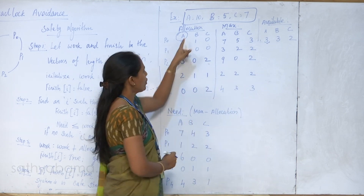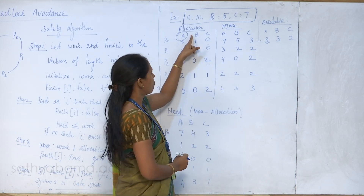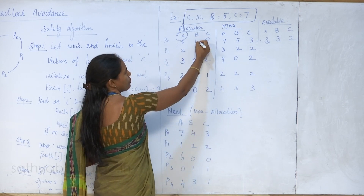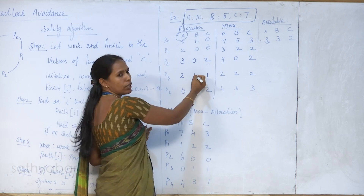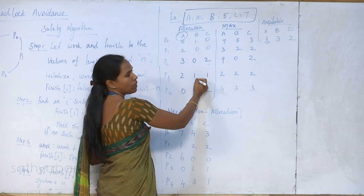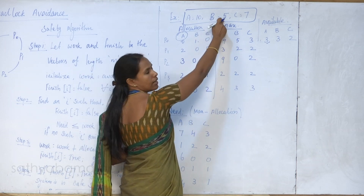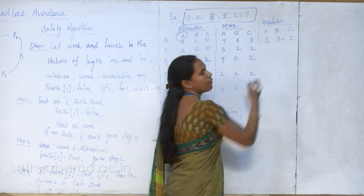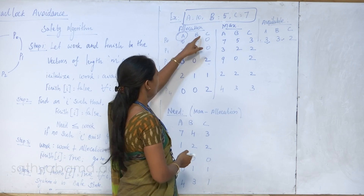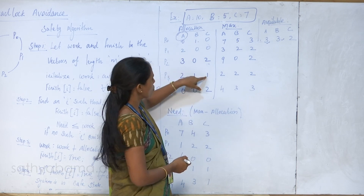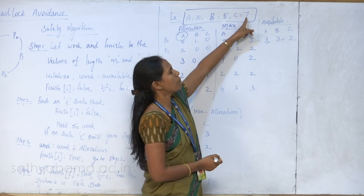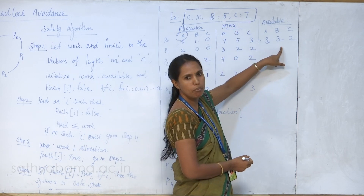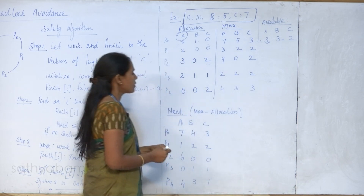For resource type B: already allocated is 1 for process P0 and 1 more for process P3, so 1 plus 1 is 2. Available is 5, so 5 minus 2 equals 3 available. For resource type C: 2 plus 1 plus 3, so 3 plus 2 is 5. So 7 minus 5 is 2. The present available matrix is 3, 3, 2.